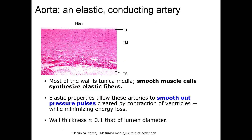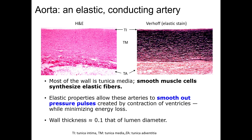In this first image, an H&E stained section of the aorta, you can appreciate the large tunica media. This Verhoeff stained section highlights the large amount of elastic fibers found in the tunica media, which allows these arteries to distend during systole and retract during diastole, sustaining continuous blood flow no matter the pressure coming from the heart. Collagen fibers are enriched in the tunica adventitia, which can contain lymphatics, nerves, and vasa vasorum.